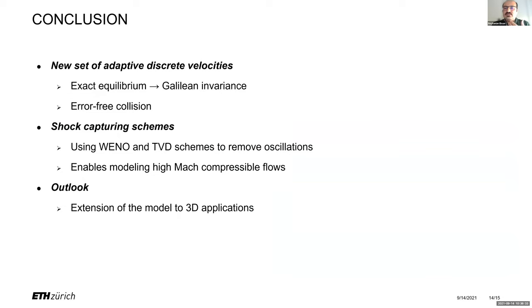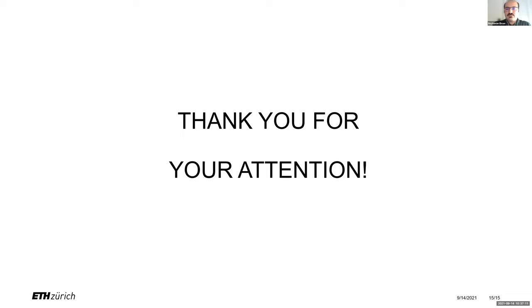In conclusion, the PonD method uses a set of discrete velocities providing Galilean invariance needed for high-speed simulations. Shock-capturing schemes — WENO and TVD B-spline — are necessary to simulate high Mach number flows. This is ongoing research; future work aims to extend applications to 3D.